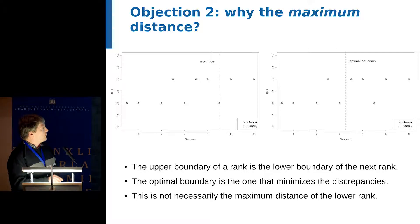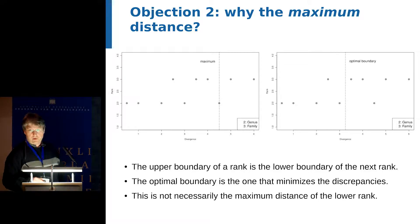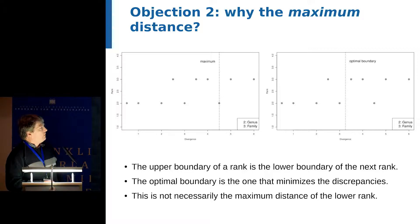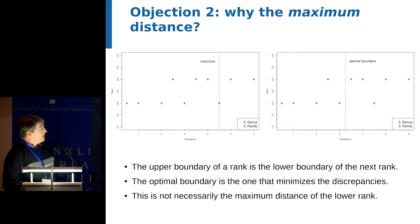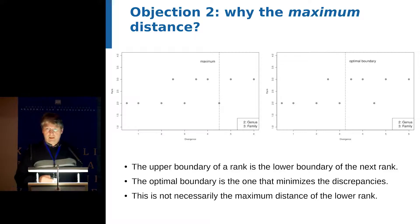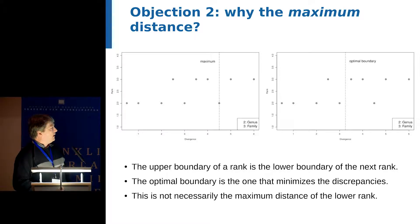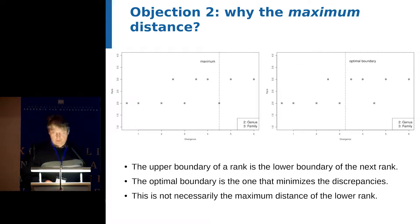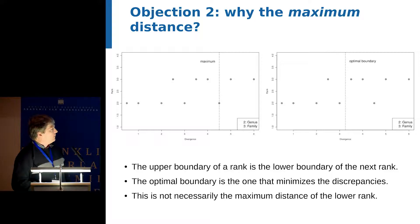In a hypothetical example dataset, we have genera with different divergence values and families with distinct divergence values. If we use the maximum divergence of the genera to define the boundary, we would have to revise three families because they are too small. But the optimal boundary placed on the same data would result in only two taxonomic modifications: only one genus would be too large and only one family too small. We should take care when estimating upper boundaries for each rank from empirical data, and statistical methods such as recursive partitioning should be used to find the best value.